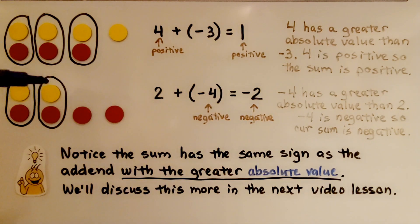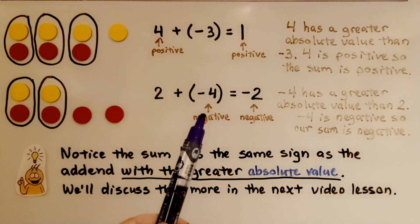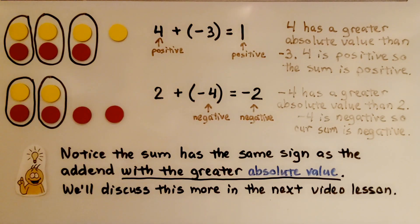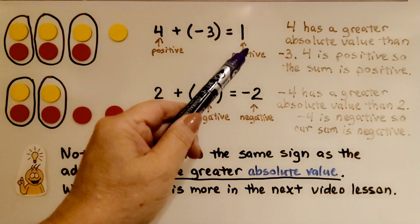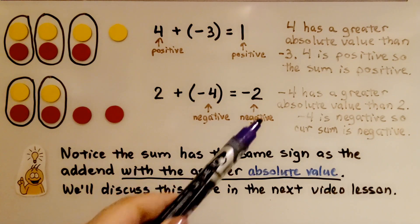Here we're adding two plus negative four. We have two yellow counters for positive two and four red counters for negative four. Negative four has a greater absolute value than two — it's farther from zero — and negative four is negative, so our sum is negative. Notice the sum has the same sign as the addend with the greater absolute value. Positive four had the greater absolute value so the sum was positive; negative four had the greater absolute value so the sum was negative.